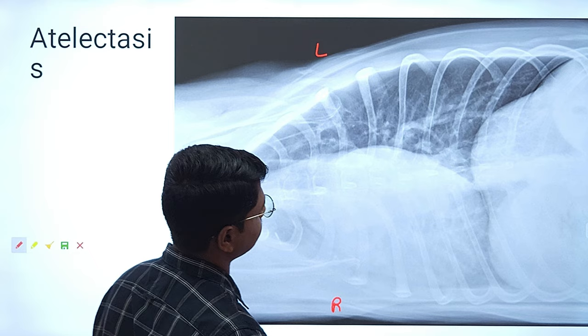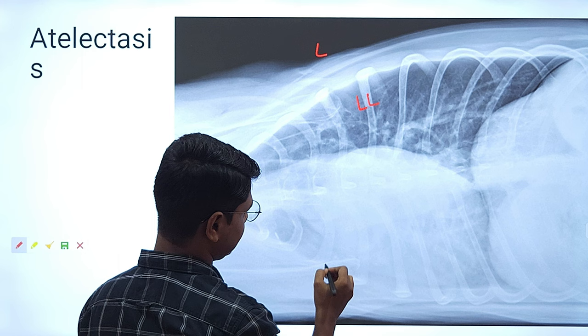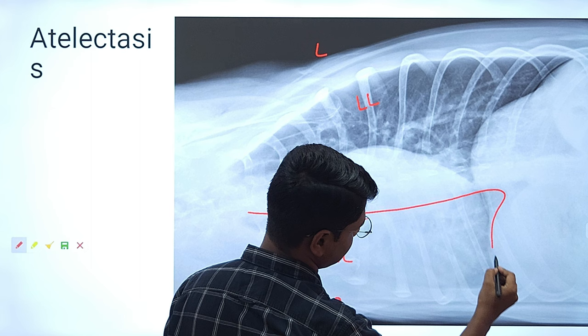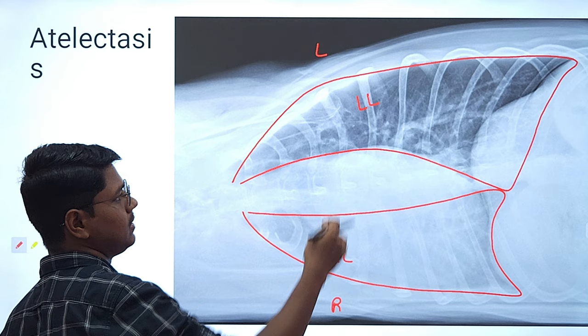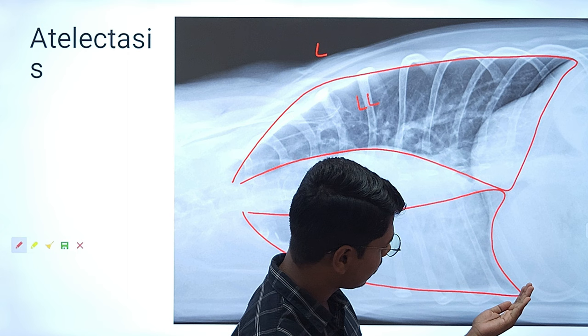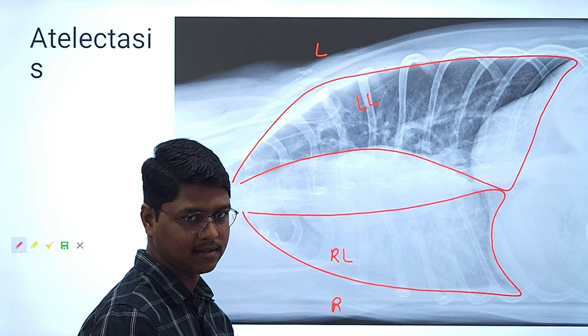See here — this is the left lung and this is the right lung. Look at the extent of the right lung. Can you see how well aerated the left lung is in comparison to the right lung? The volume of the right lung is comparatively less than the left lung. You can say this lung is atelectatic, or you can say the lung is collapsed.